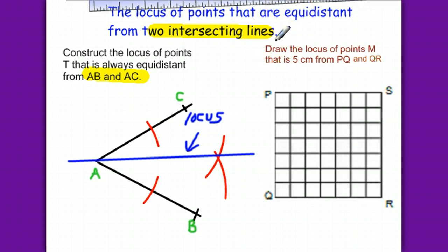Now, the second question: Draw the locus of points M that is 5 centimeters from PQ and QR. So, PQ and QR—we have two intersecting lines here. And so, the locus is the line right in the middle.